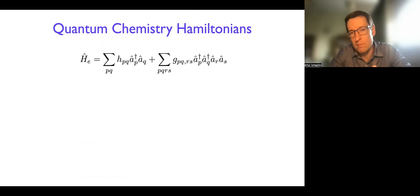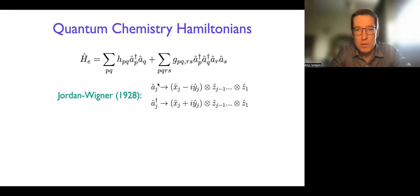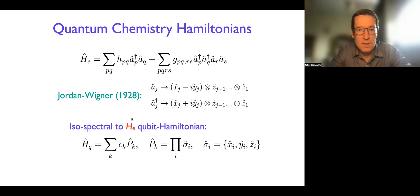Now in quantum chemistry, one way to encode the Hamiltonian to go from fermions to qubits is to use second quantized form of the Hamiltonian. We have a simple mapping between fermions to qubits where X, Y, Z are the Pauli operators, right? And this is Jordan-Wigner mapping. There are other forms like people use first quantization as well. But this second quantized form is very simple and we like it because of that. If you do this Jordan-Wigner mapping, you get either spectral qubit Hamiltonian, where you get linear combination of Pauli products.